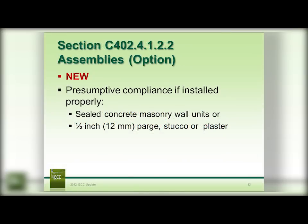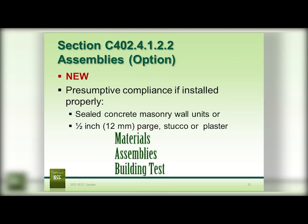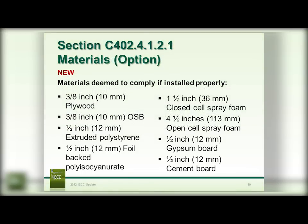Section 402.4.1.2 gives air barrier compliance options. There are three options and you can choose from any one of them, or use all of them. The materials option provides a list of materials deemed to comply if properly installed, including plywood, cement board, gypsum board, different thicknesses of open-cell and closed-cell foam, polystyrene, and foil-back polyisocyanurate. Also deemed to comply are built-up roofing, fully adhered single ply, 5/8-inch Portland sand parge, cast-in-place concrete, sheet metal aluminum, and fully grouted block masonry.